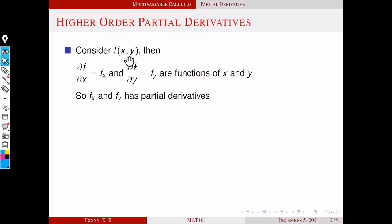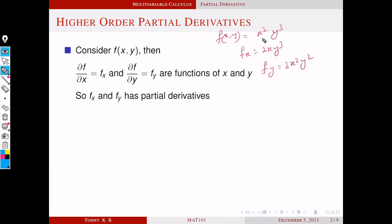Consider the first-order partial derivatives of a function f, denoted by f_x and f_y. We know that these partial derivatives are again functions of x and y. For example, consider f equal to x squared y cubed. It is clear that f_x is 2xy³ and f_y is 3x²y², so f_x and f_y are again functions of x and y.